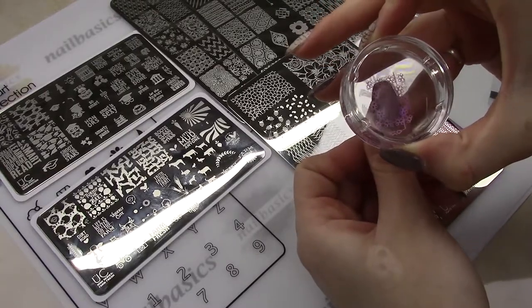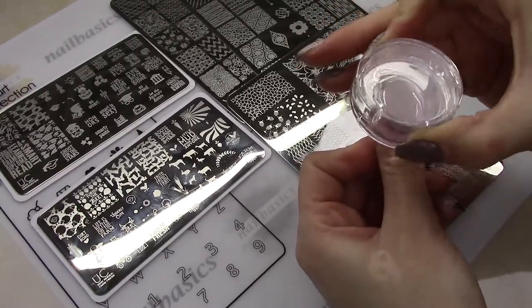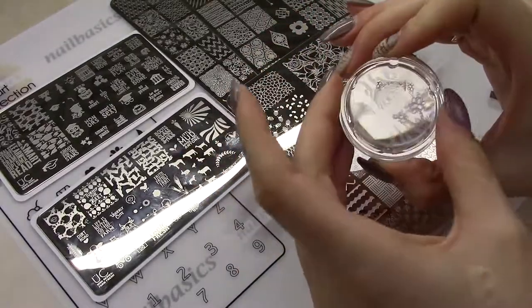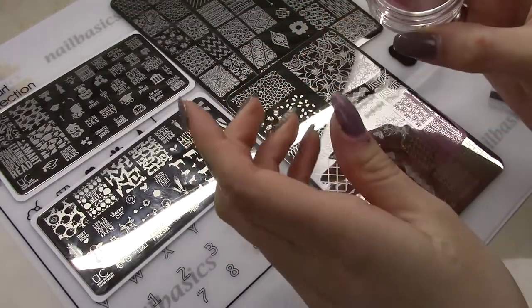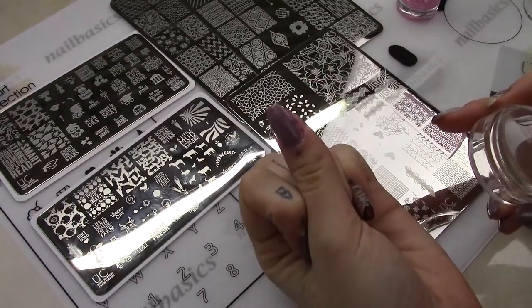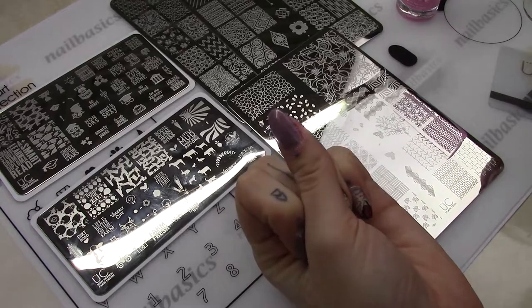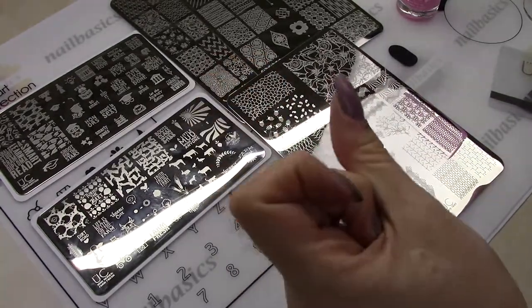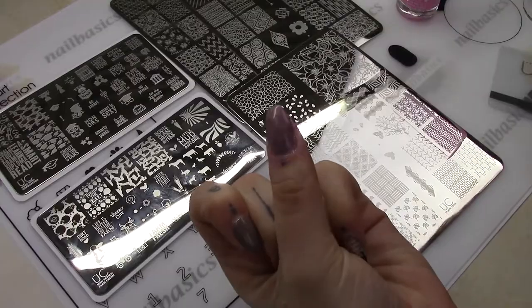And then because this stamper has no extra piece on it, this holder is super short. There's literally no tunnel vision so it's really nice. I do kind of prefer this holder over the taller one but it's totally personal preference. But as you can see it stamps very nicely.